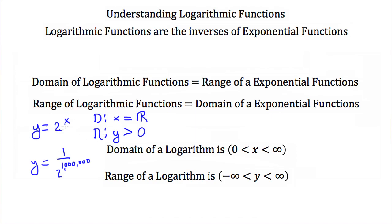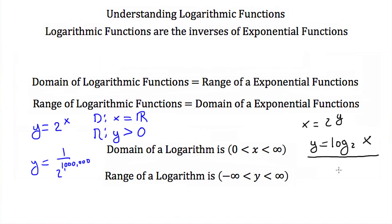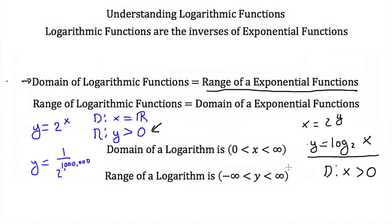If I find the inverse of y is equal to 2 to the x, I just swap my x and y. This becomes x is equal to 2 to the y, and now I want to solve this for y, so I write this as a logarithm: y is equal to the log base 2 of x. The domain of this inverse function is just the range of the exponential. Our range of the exponential was y has to be greater than zero, so the domain of this logarithmic function is that x has to be greater than zero. You can't take the log of zero or a negative number, because that's outside the domain.